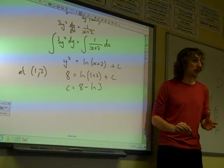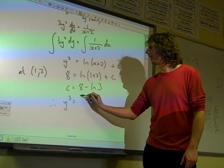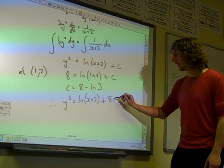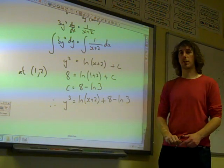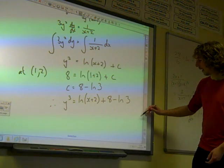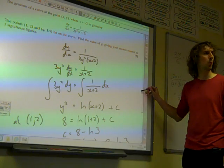So our equation becomes y³ is the natural log of (x+2) plus 8 minus the natural log of 3. Not the world's prettiest equation. We're also told that it passes through the point (q, 1.5).